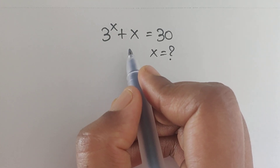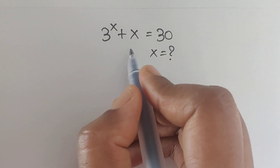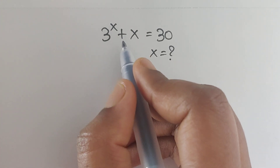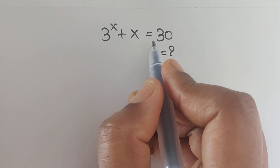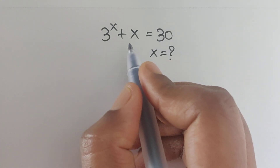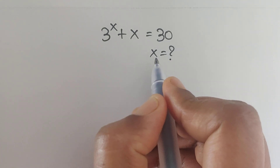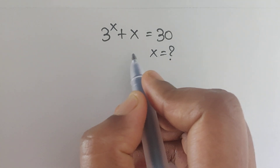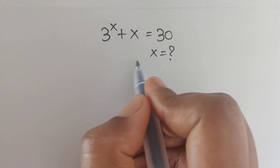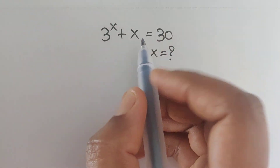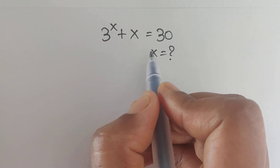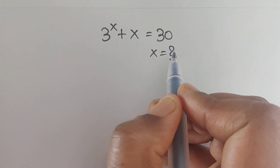Hello everyone, welcome back to our channel. Here we have one question: 3 to the power x plus x equals 30. In this problem we have to find the value of x. We will solve this problem by using the Lambert W function.